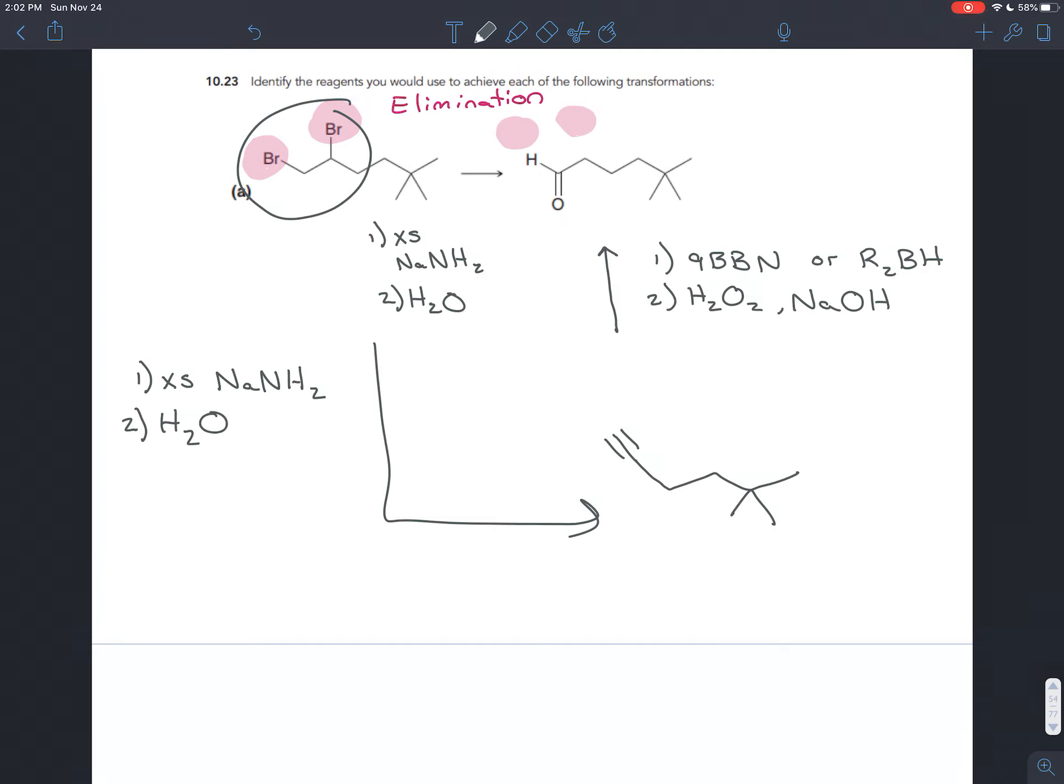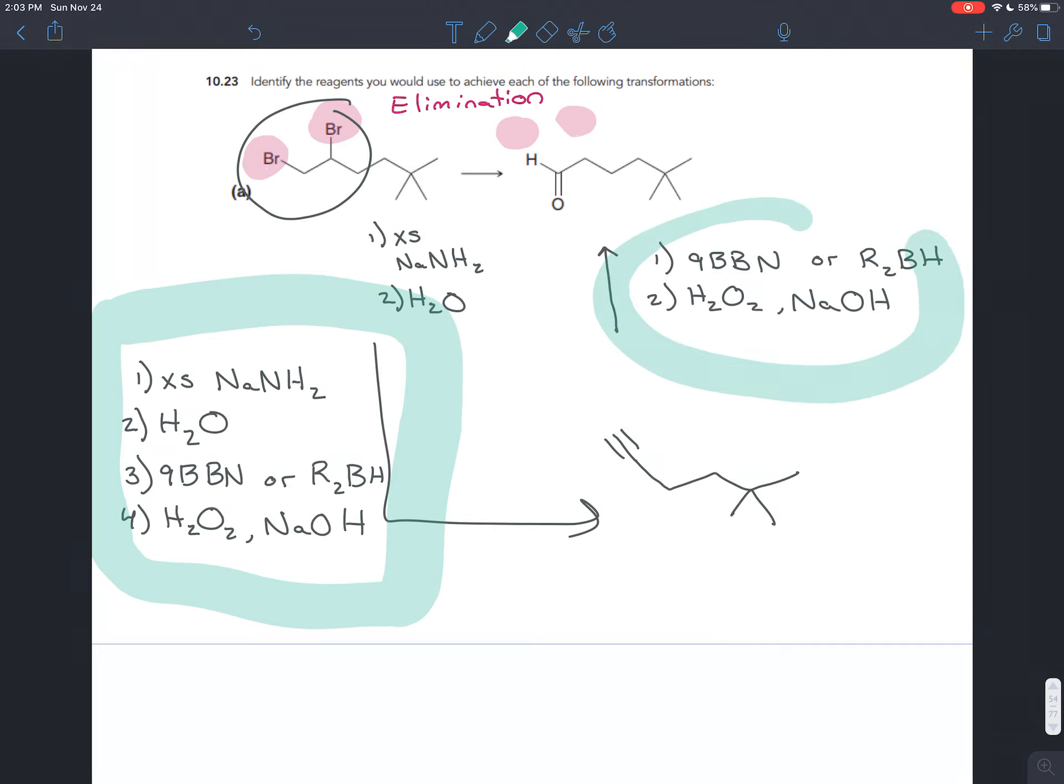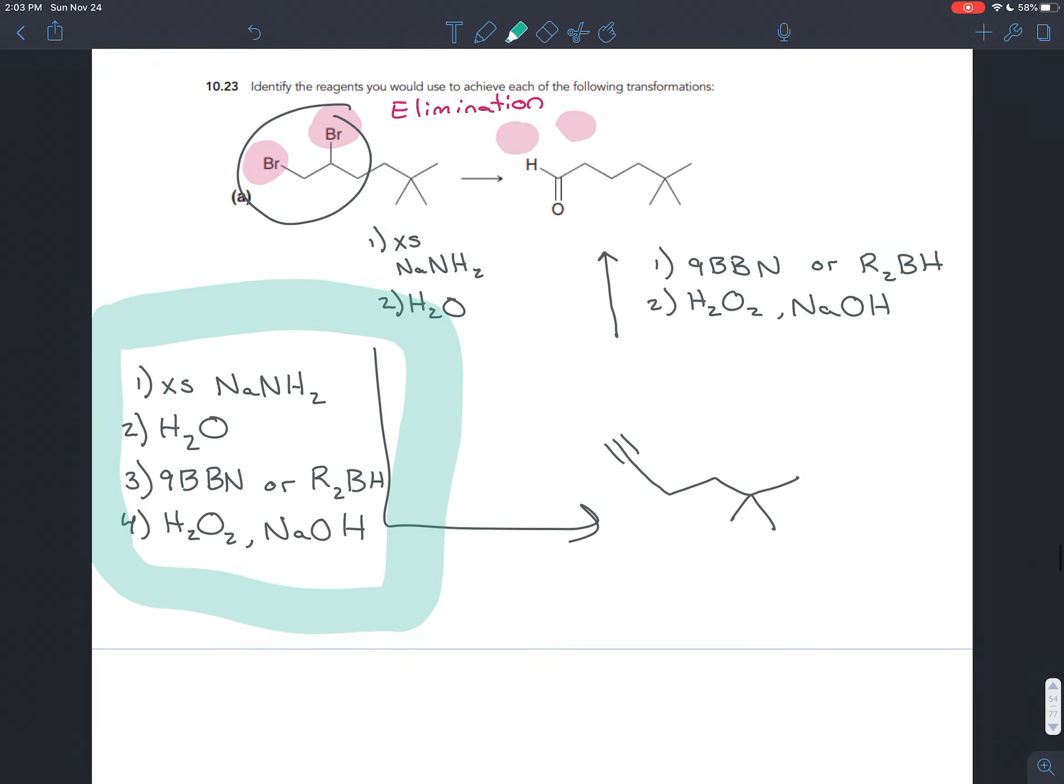Once you have that alkyne, you can add the oxygen on the less substituted carbon by doing hydroboration oxidation. First, add 9BBN or any dialkyl borane, then follow with hydrogen peroxide H2O2 and sodium hydroxide NaOH. The hydroboration oxidation adds H and OH anti-Markovnikov onto the triple bond. You'll have an enol that keto-enol tautomerizes into the aldehyde, as we've discussed previously.